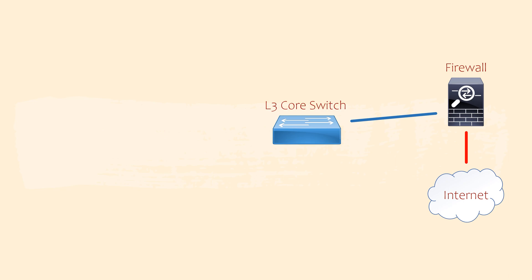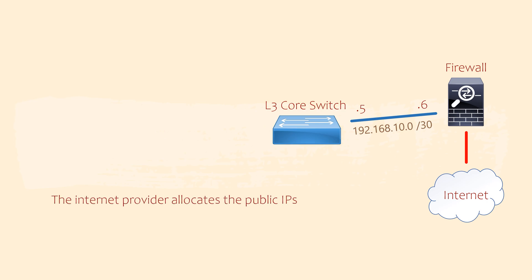Just like the WAN router, we add a small /30 subnet and IP addresses. As for the subnet between our firewall and the internet provider, that's given to us by the provider — we usually don't get much say in that. But for completeness, we'll document it here too. Let's say that our ISP gave us 203.0.113.128/30. The ISP has said that they will use .130, which leaves us to use .129.